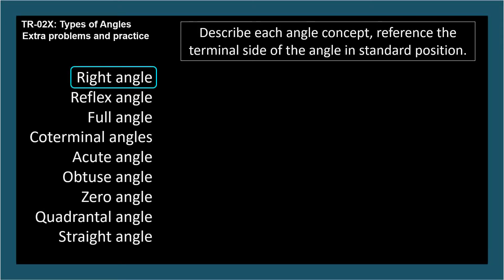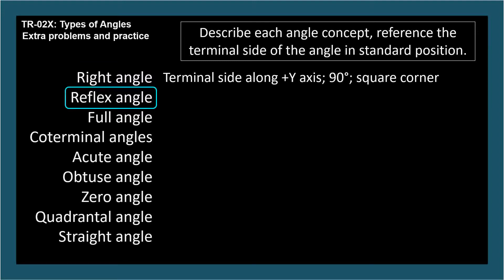Right Angle: The terminal side is along the positive y axis, 90 degree angle, square corner. Reflex Angle: The terminal side is in quadrant 3 or 4. The angle is between 180 and 360 degrees.